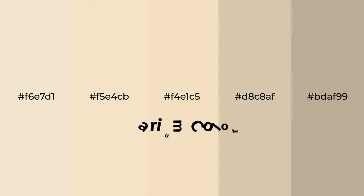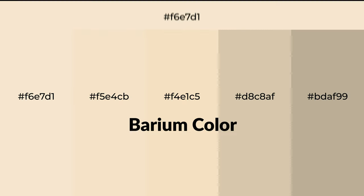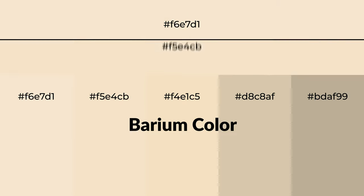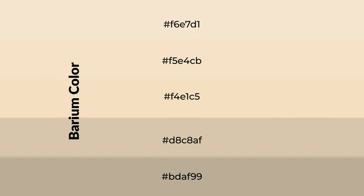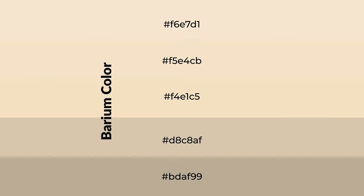Warm shades of barium color with a yellow hue for your next project. To generate tints of a color, we add white to the color. Tints create light and exquisite emotions. To generate shades of a color, we add black to the color.